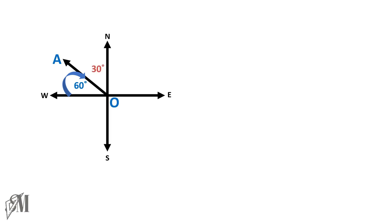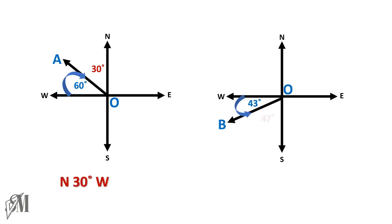But we can find out the angle from north. Between north and west, the angle is 90 degrees. So if this part is 60, the remaining part will be 30 degrees. Therefore, we can write the location of A as north 30 degrees west.